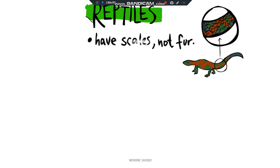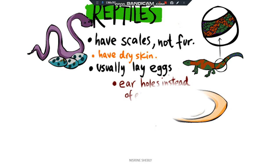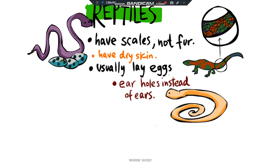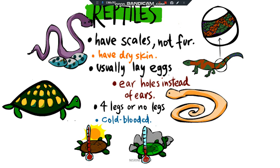To summarize, reptiles have scales, not fur. They have dry skin. They usually lay eggs. They have ear holes instead of ears. They have four short legs, or no legs at all like a snake. And finally, they are cold-blooded animals.